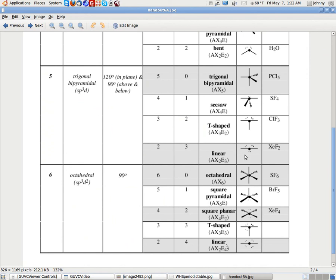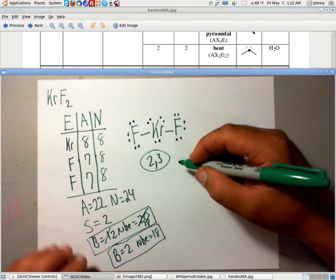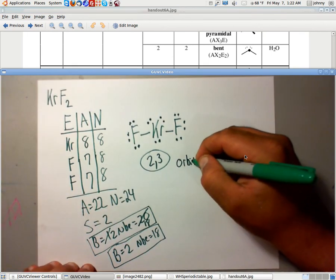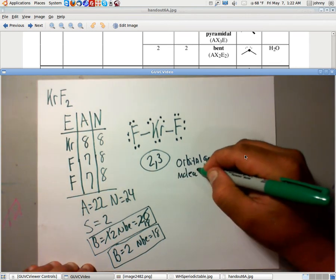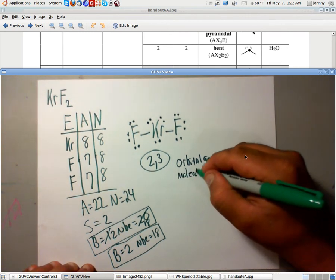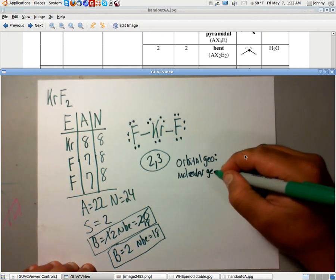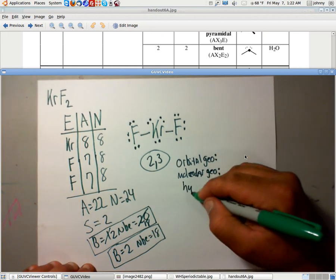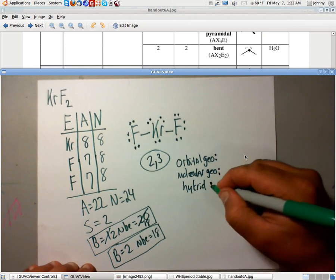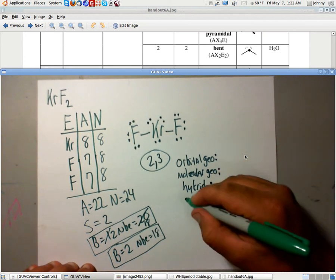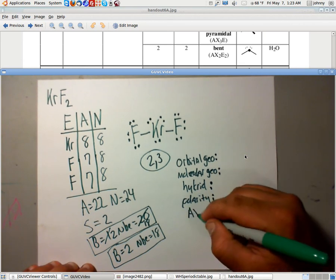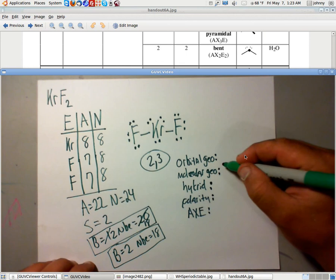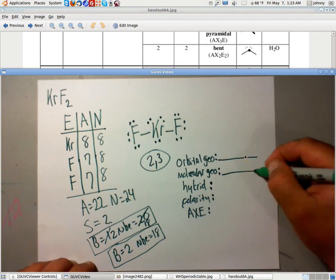So let's go ahead and make a list of those, the things that we're trying to find. We're trying to find orbital geometry. We're trying to find molecular geometry. Hybridization. What else? Polarity. And AXE notation.